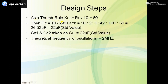For capacitor design, using the thumb rule: XCE = RE / 10 = 60 Ω. Then CE = 1 / (2π × FL × XCE), where FL = 100 Hz, giving CE = 22 µF. The same 22 µF value is used for CC1 (input coupling capacitor) and CC2 (output coupling capacitor). The theoretical frequency of oscillation is 2 MHz, because the quartz crystal we are using has a frequency range of 2 MHz.